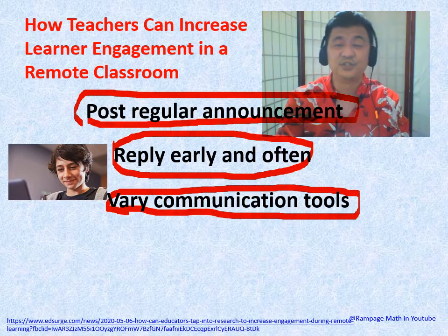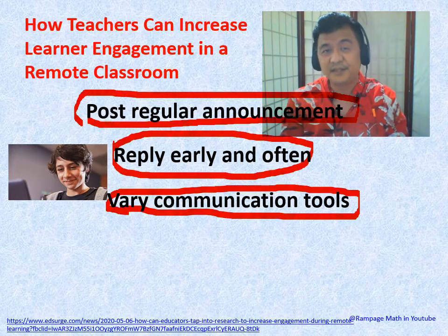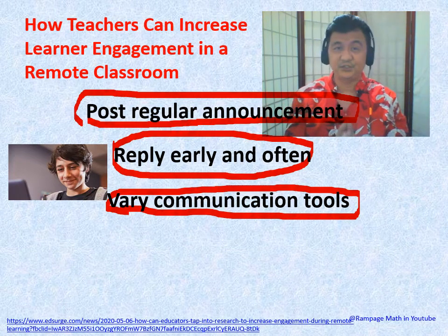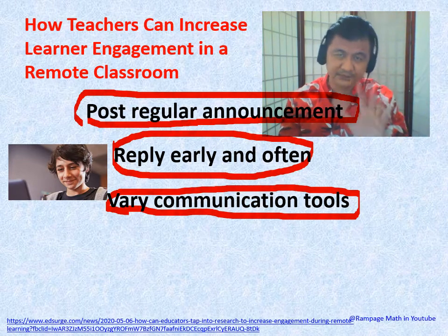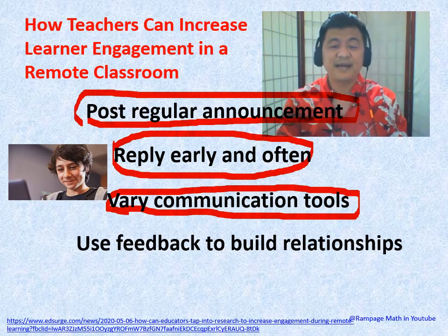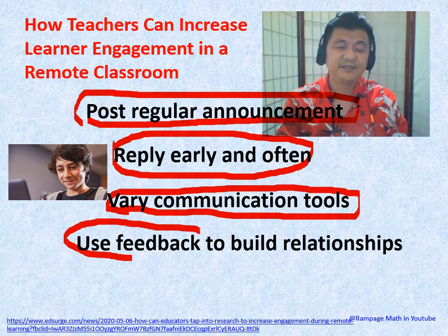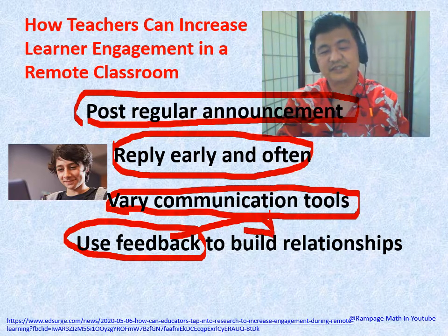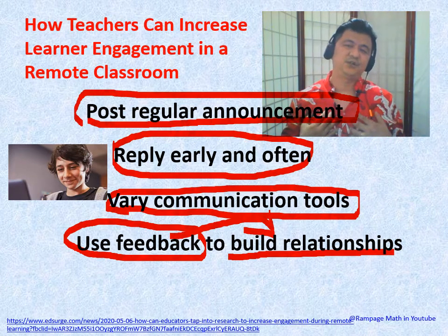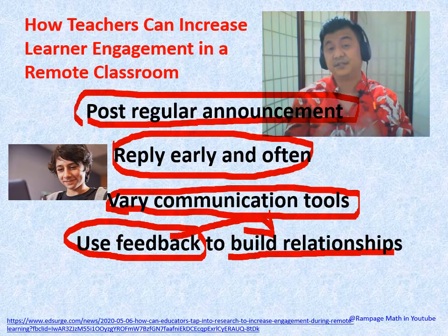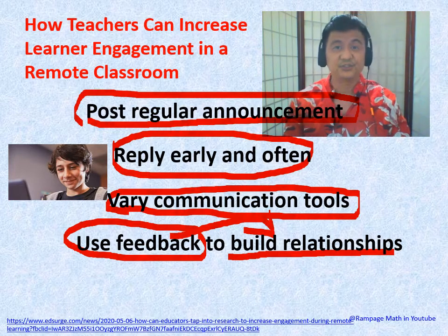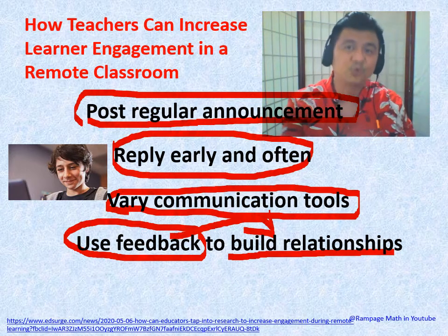Number three: use varied communication tools — email, text, Google Hangout, social media — with parent and administrator permission. Number four: use feedback to build relationships. Even if homework is submitted through automated tools like Kahoot or Quizziz, the student should still know their weaknesses. Schedule one-on-one appointments — 'I know fractions is your weakness; let's address it during my office hour.'